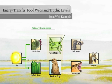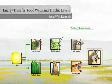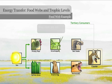Primary consumers are herbivores and eat producers. Secondary consumers are carnivores that eat primary consumers. Tertiary and quaternary consumers are the third or fourth level consumers who prey upon all types of consumers — they are the top carnivores. Omnivores are consumers that eat both producers and consumers.